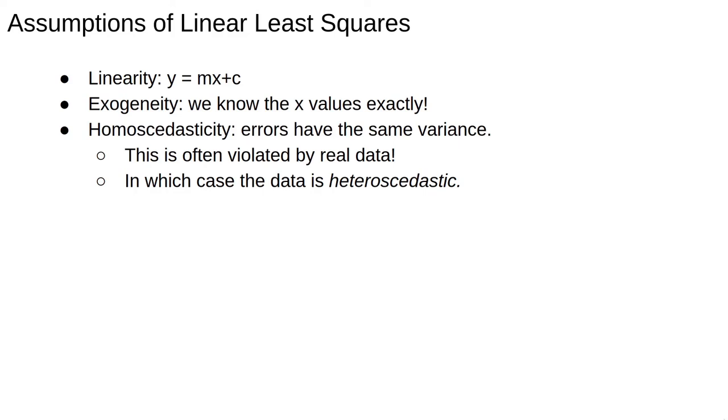If the variance is not constant, the data is said to be heteroscedastic, and a naive linear fit might not be completely correct.